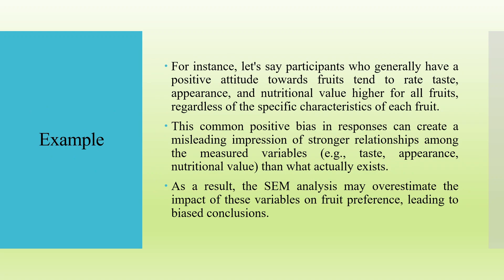One example of common method bias: participants who generally have a positive attitude towards fruits tend to rate taste, appearance, and nutritional value higher for all fruits, regardless of the specific characteristics of each fruit. This common positive bias in responses can create a misleading impression of stronger relationships among the measured variables — taste, appearance, nutritional value — than what actually exists. As a result, the analysis may overestimate the impact of these variables on fruit preference, leading to biased conclusions.